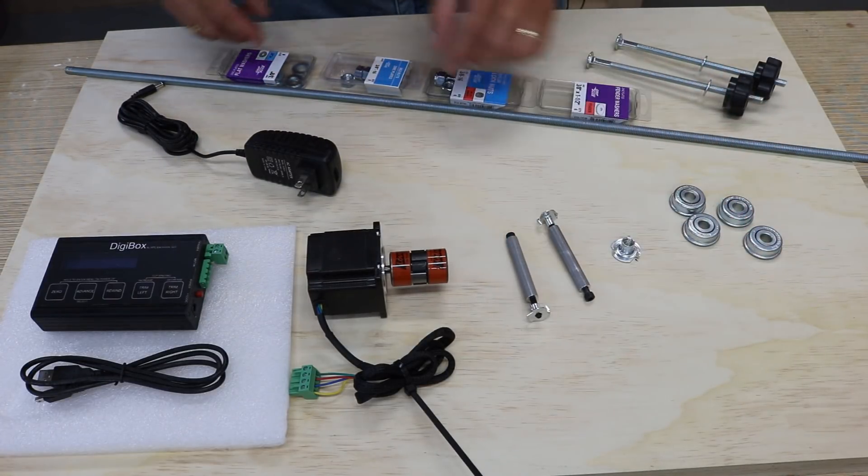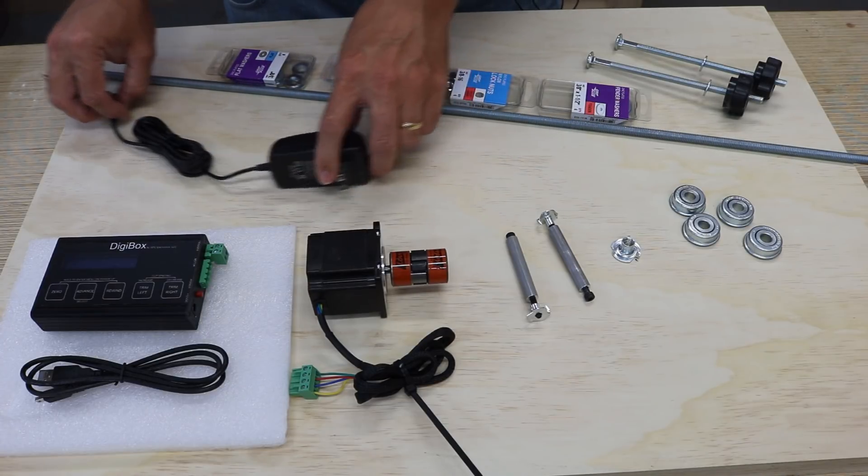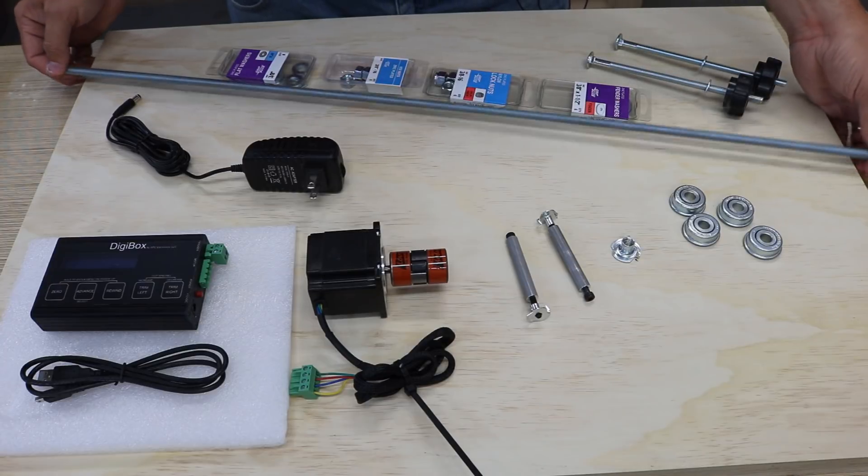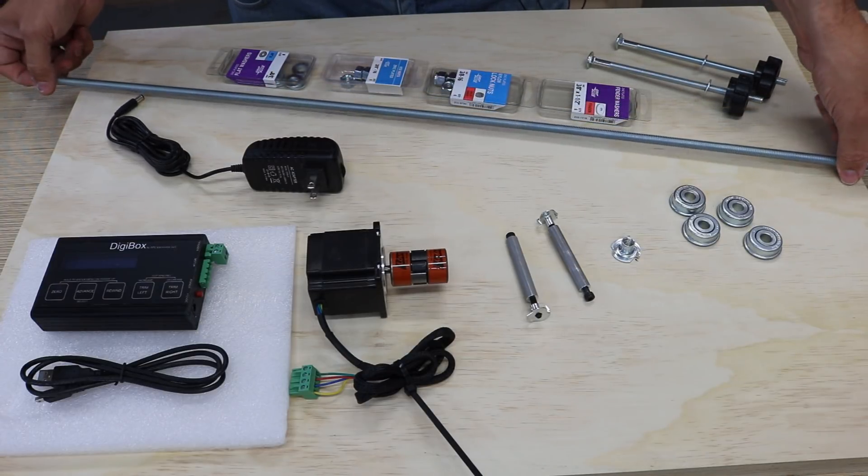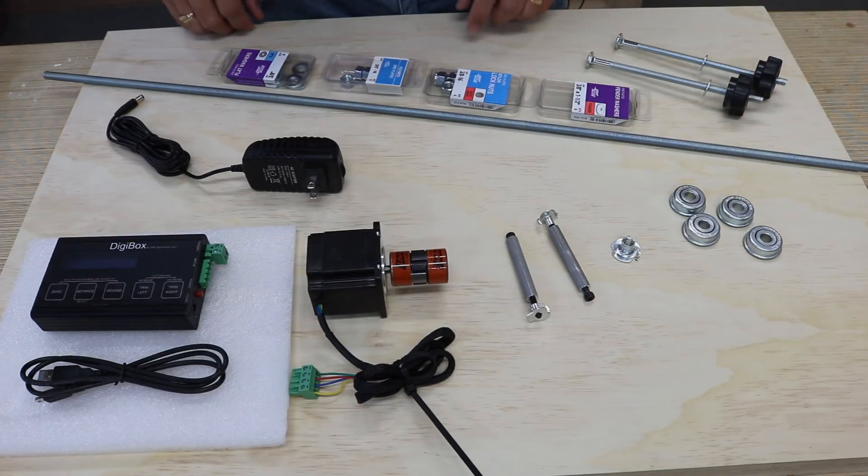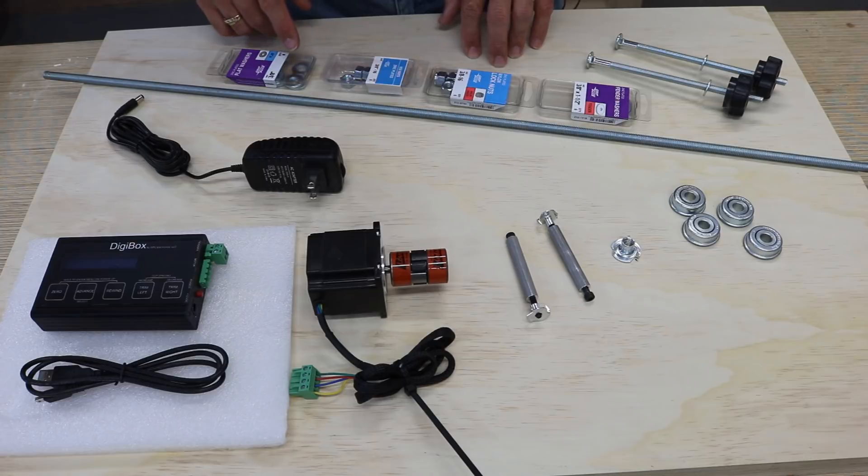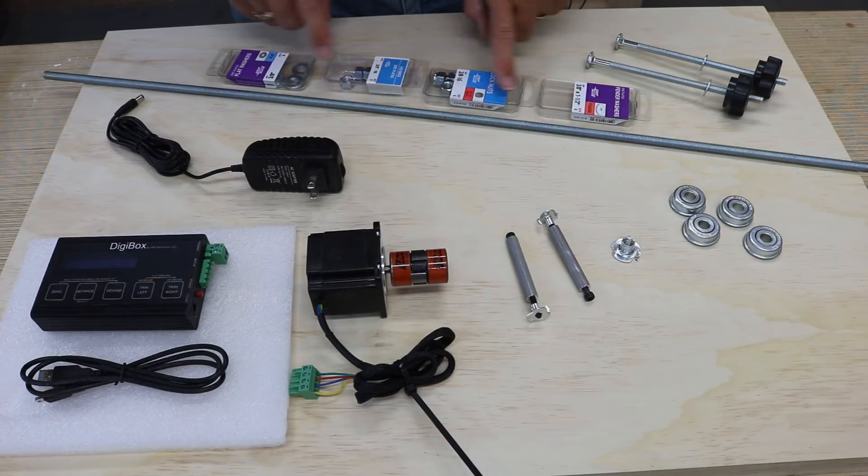Separately, you would have to buy the power supply, and I'll put a link in the description below for that. Besides all that, you have to buy the 3-8 by 16 all-thread, and mine is 36 inches. While I was at the store, I went ahead and bought washers, fender washers, 3-8 nuts, and 3-8 lock nuts. Not sure if I'll need these at this time, but I bought them just in case.